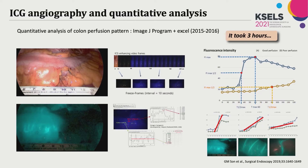At the initial period of study, fluorescence images were obtained from still frames of the operative video. Fluorescence intensity was measured using ImageJ and mean values were calculated in Excel, then the fluorescence intensity graph was plotted manually. This manual analysis procedure took 3 hours per case, making it useless in the surgical field. However, we could categorize ICG enhancing patterns into fast, moderate, and slow perfusion, and understand that graph patterns were related to perfusion status and could predict anastomotic complications.